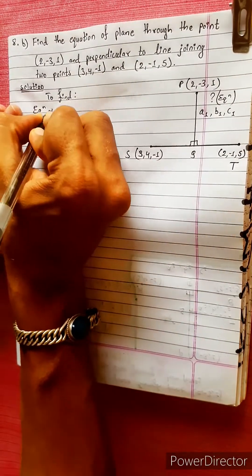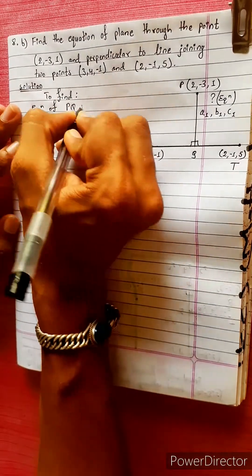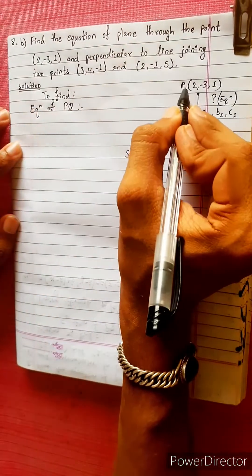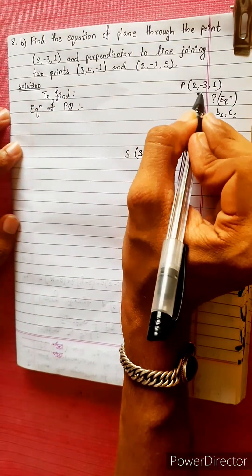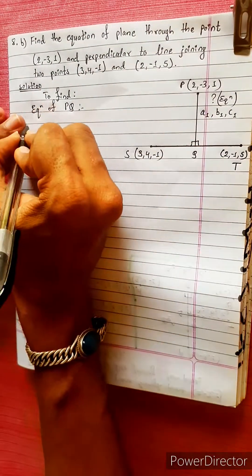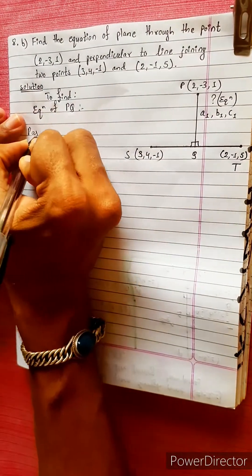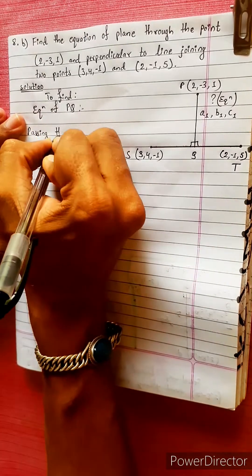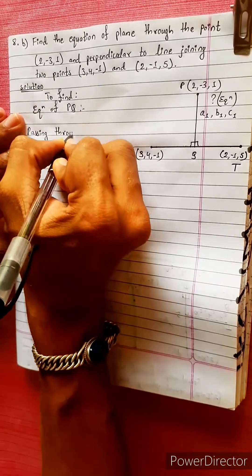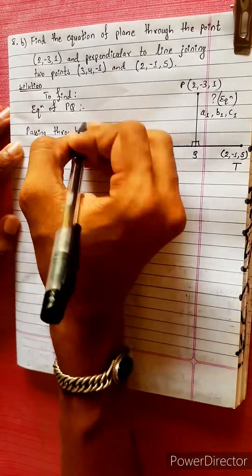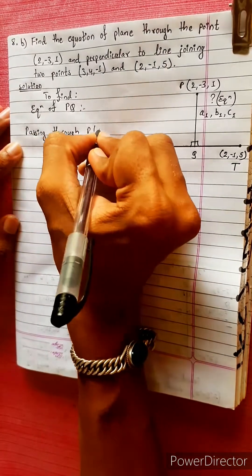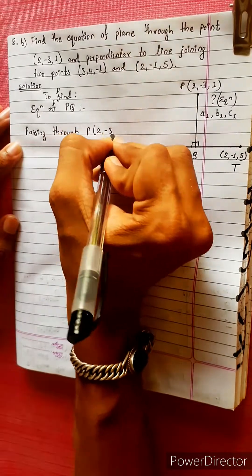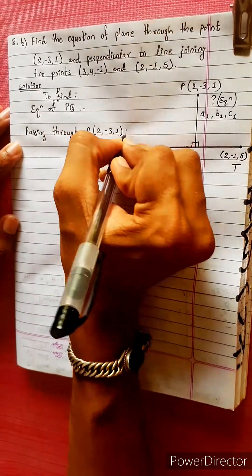The equation of line PQ — where does it pass? It passes through point P, which is (2, -3, 1). This is the equation.